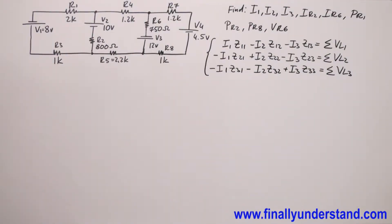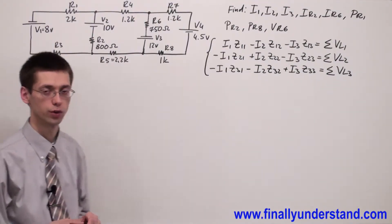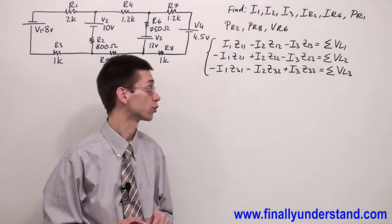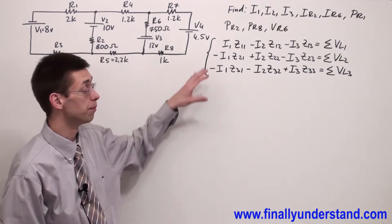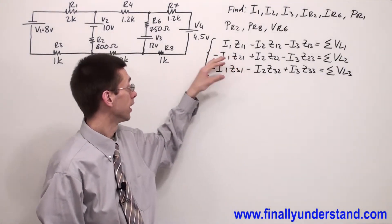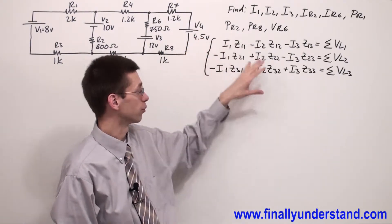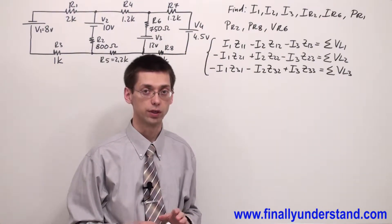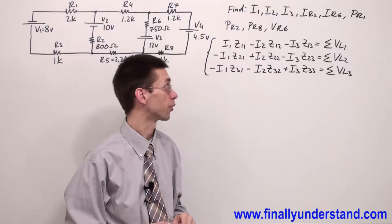Let's take a look at this example. This time we have three loops. Three loops means we're supposed to have three mesh equations. And this is the general formula for the three mesh equation problem.